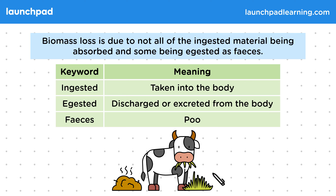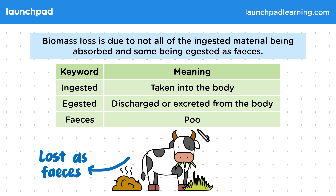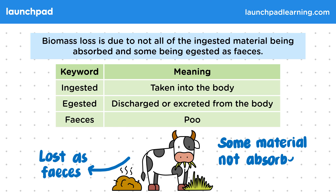You can see a cow eating grass. Some of the energy this cow gets from the grass will be lost as faeces. This is because some of the material from the food eaten is not absorbed at all and therefore passes right through and comes out as faeces.